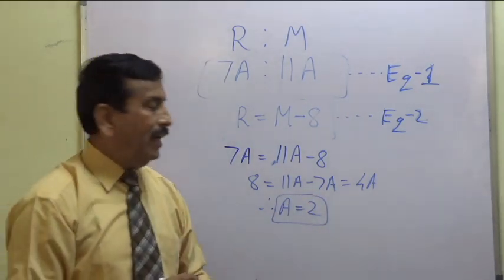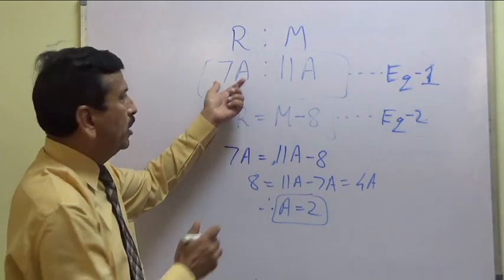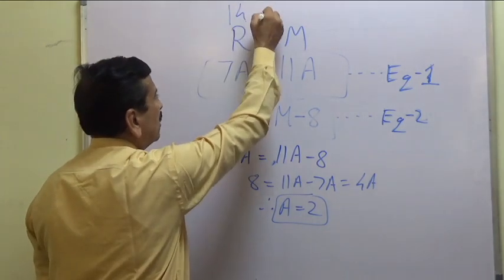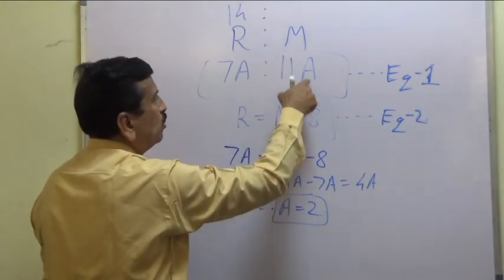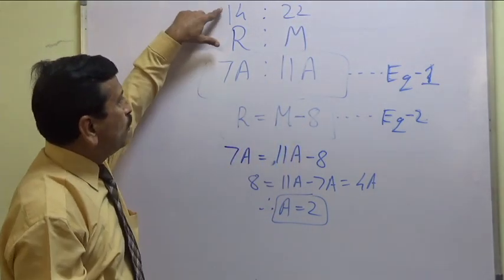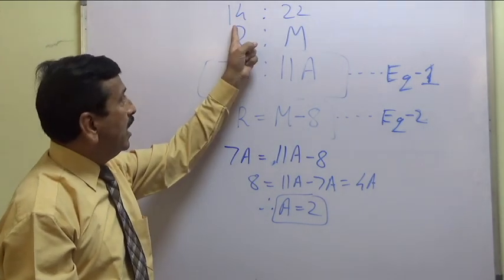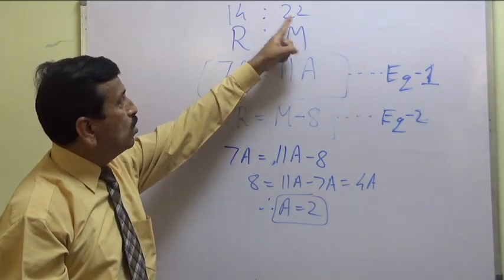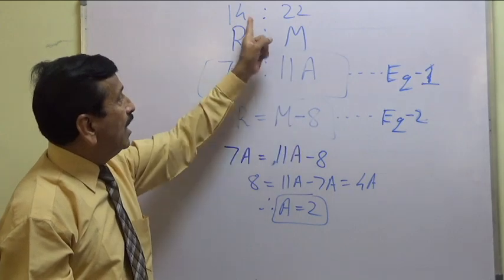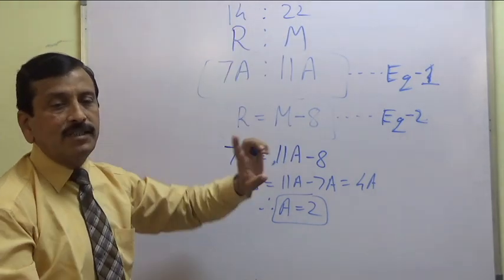The moment we get a equals 2, we substitute back: 7 times 2 gives 14, and 11 times 2 gives 22. Ram is 14 years of age and Mohan is 22 years of age. Their ages are in ratio 7 to 11 and the difference in their age is 8 years. So this is the answer.